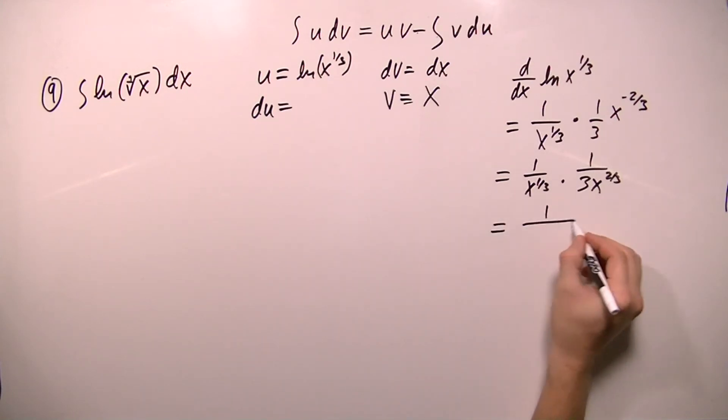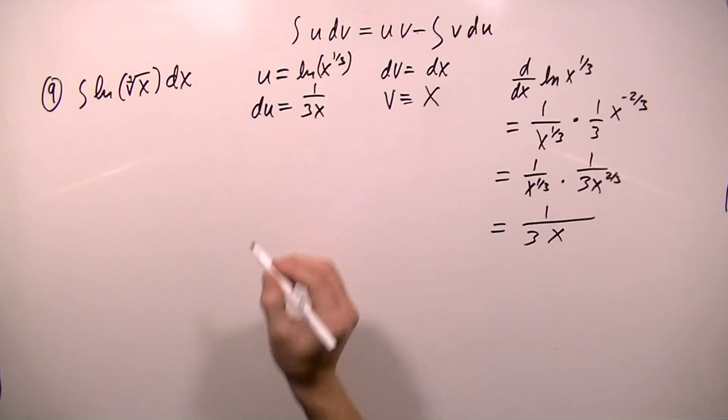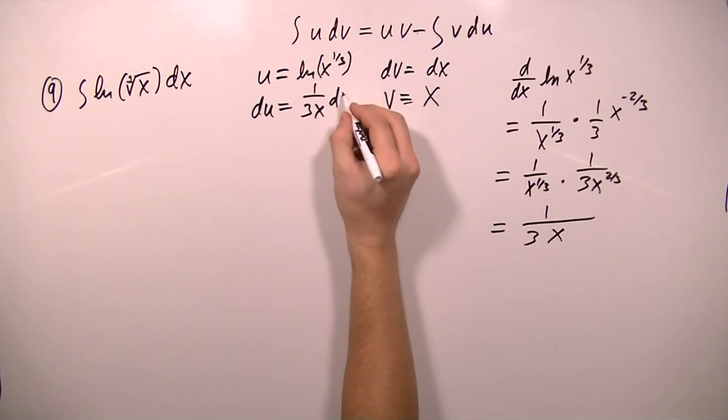So when I multiply here, I keep the 3 and then I add the exponents, which is going to be x to the 1. So du is going to equal 1 over 3x dx.